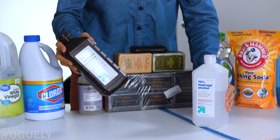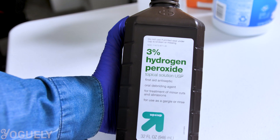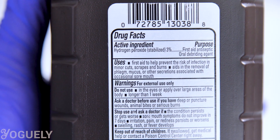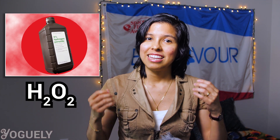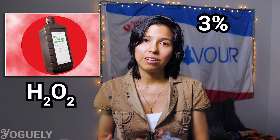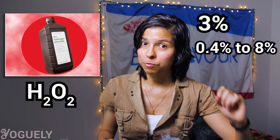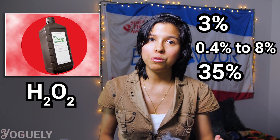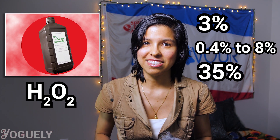Hydrogen peroxide is a staple cleaning agent and the active ingredient in many household cleaners. It's nice to use because you don't need to dilute it yourself — it comes diluted with purified water or with other inactive ingredients to a variety of concentration levels. The hydrogen peroxide H2O2 is typically diluted to 3% for topical solutions, and can also be found at concentrations between 0.4% to 8% and even up to 35% for solutions marketed as cleaning agents.